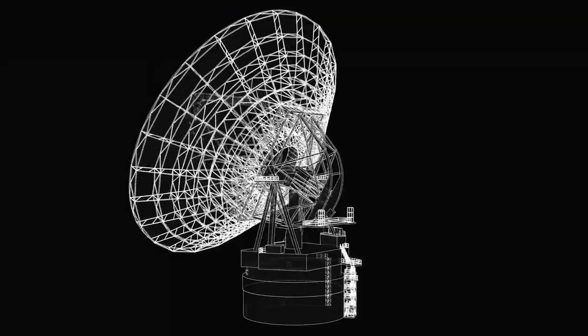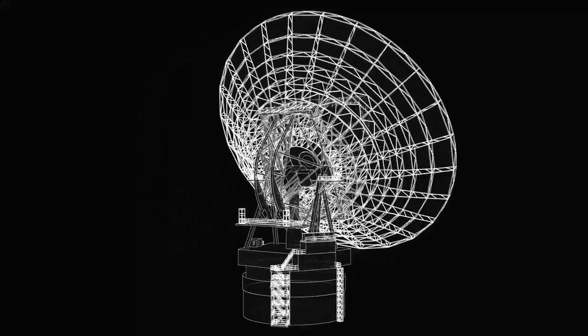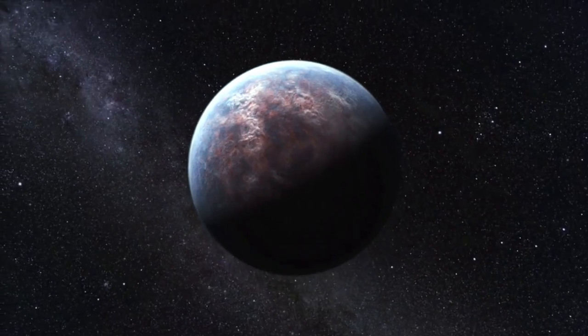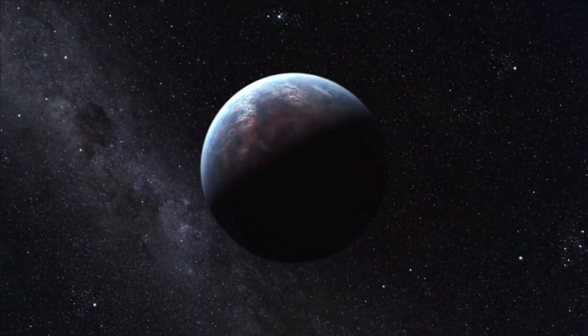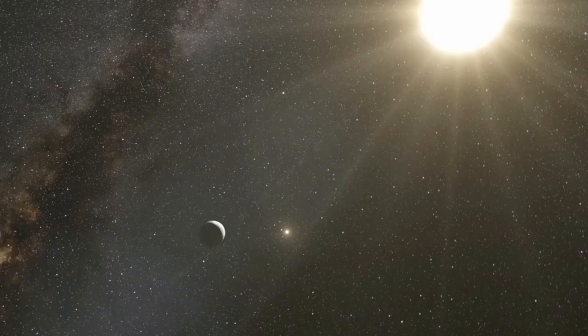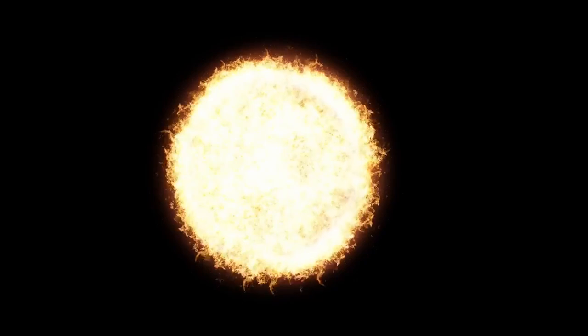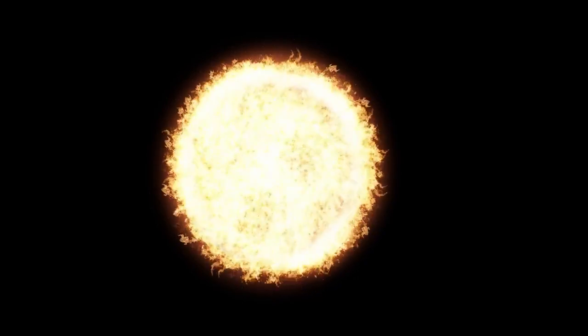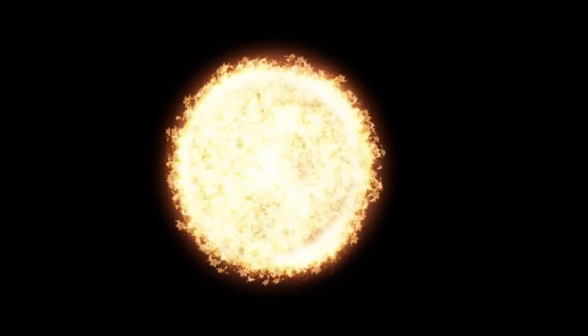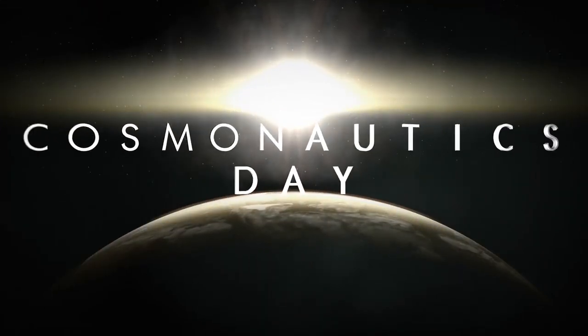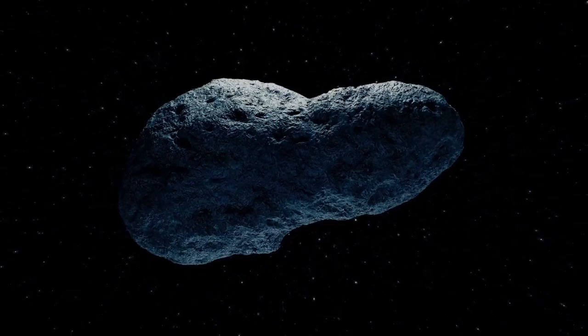As Webb continued to monitor 3i Atlas, one of the most baffling discoveries came not from its visible light but from its energy profile. Natural comets and asteroids emit heat chaotically, releasing gases as the sun's radiation cracks their icy surfaces. But 3i Atlas did not behave this way. Instead, it seemed to regulate its heat output, releasing energy in rhythmic intervals, almost like a heartbeat. Infrared data showed that these pulses weren't random—they repeated in sequences that mirrored mathematical constants.